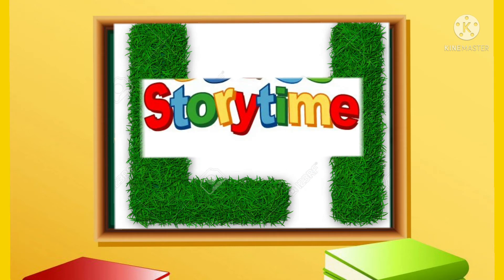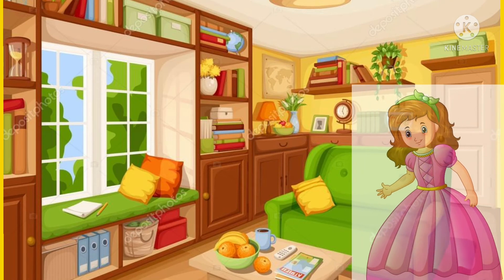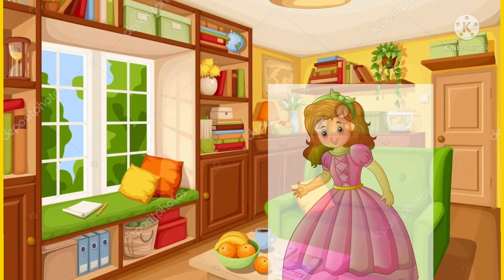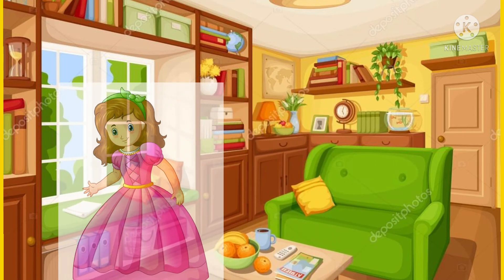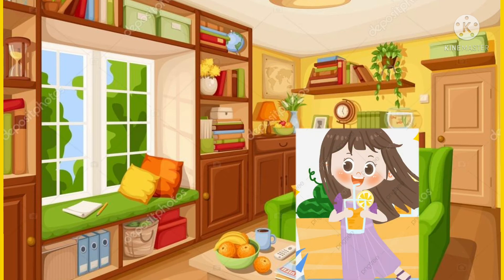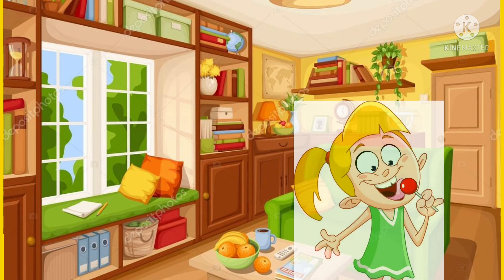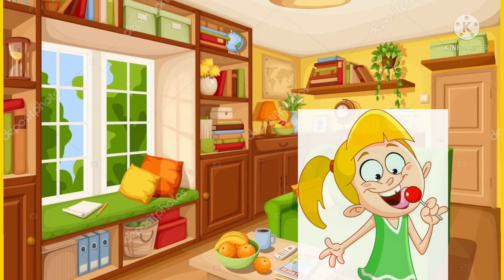Now, it's time for the story of sound L. There is a little girl. Her name is Lena. Lena is looking lovely in her dress. She likes to have leafy vegetables and lemon juice for lunch. She likes to lick lollipop. Mama gave her a lollipop and she started licking the lollipop. Lick, lick, lick.